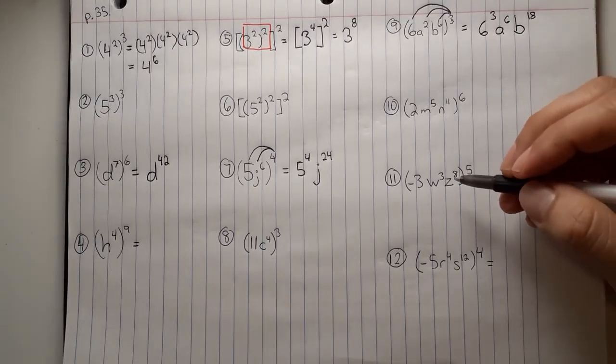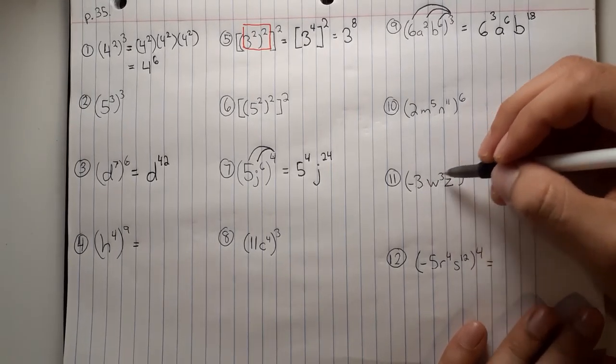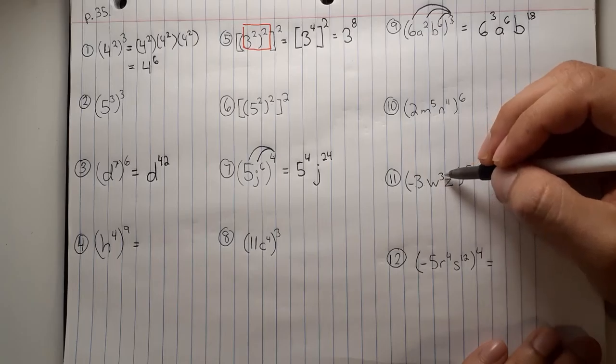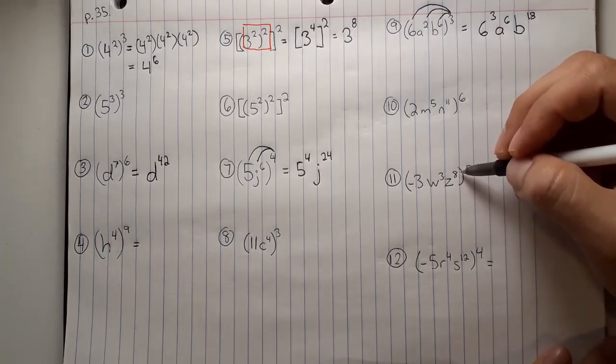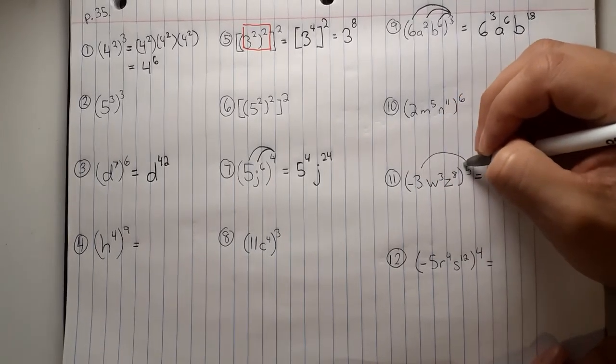All right, now we'll do question 11. Negative 3 times w to the power of 3 times z to the power of 8, all to the 5th power. The 5 will be distributed.